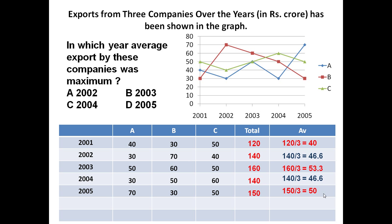And in 2005: 150 divided by 3 is equal to 50. So now you have to find out in which year average export by these companies was maximum. If you see these figures, the maximum is 53.3 in 2003. So the answer is 2003 — average export by these companies was maximum in 2003.